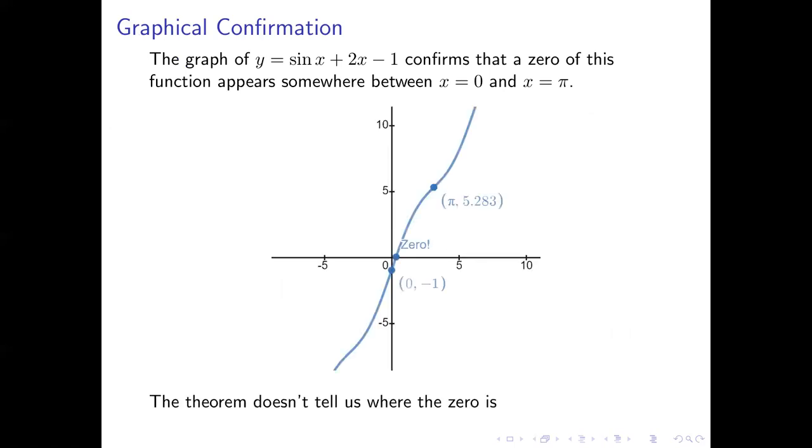We can confirm this graphically. Here's the graph of our function in blue. You can see it wobbles back and forth, and you can see labeled on the graph, we have the point (0, -1), which we know is on there because we found that f(0) is -1, and we have the point (π, 5.283). 5.283 is a decimal approximation of 2π - 1.